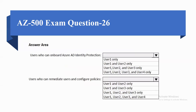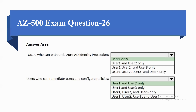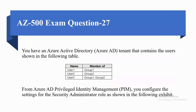The options for who can onboard Azure AD Identity Protection are: User 1 only; User 1 and User 2 only; User 1, User 2, and User 3 only; or all users. For who can remediate users and configure policies, options include User 1 and User 2 only, User 1 and User 3 only, User 1, User 2, and User 3 only, or User 1, User 2, User 3, and User 4. The correct answers: for onboarding, User 1 only; for remediation and policy configuration, User 1 and User 2.